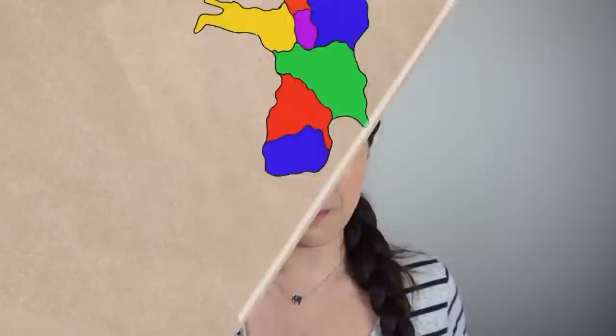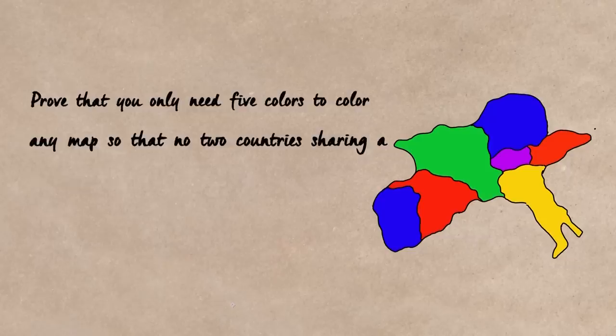Cool. So equipped with these three tools of mathematical deduction, let's make a start on this proof. Prove that you only need five colors to color any map so that no two countries sharing a border are the same color. This is going to be fun.